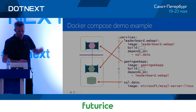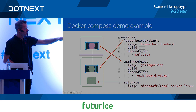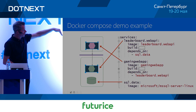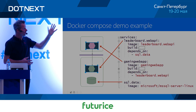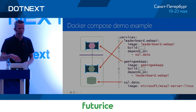You describe services in the YAML: 'leaderboard-web-api' uses the image 'leaderboard.webapi' and depends on 'sql.data'. 'sql.data' is described as the Microsoft SQL Server Linux image. 'gaming-web-app' depends on the Web API and has its own image with build instructions pointing to the Dockerfile for each project. It's a complete description of your application. Docker Compose knows the dependencies and order. There may be race conditions, but you can spin everything up or build everything with a single command.